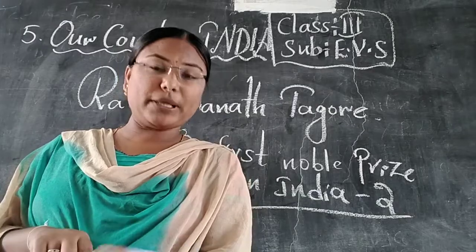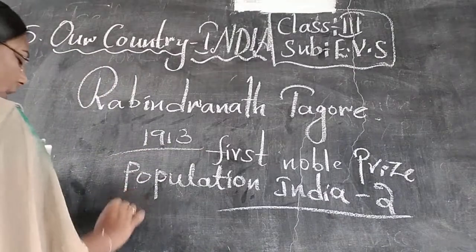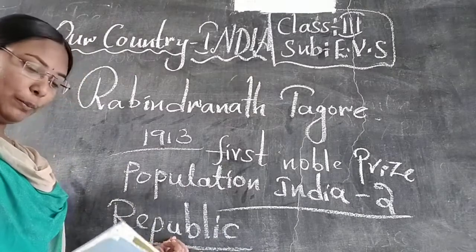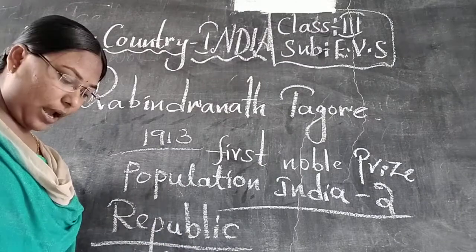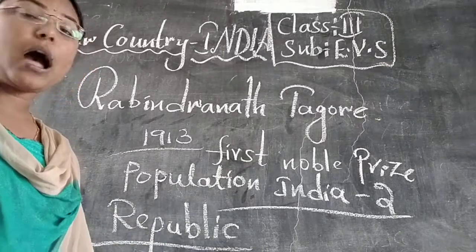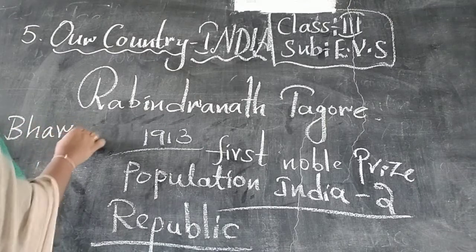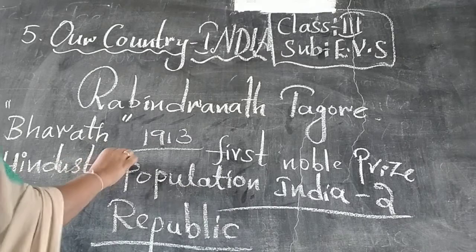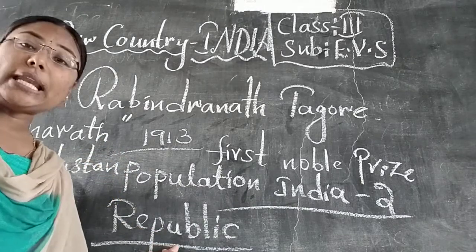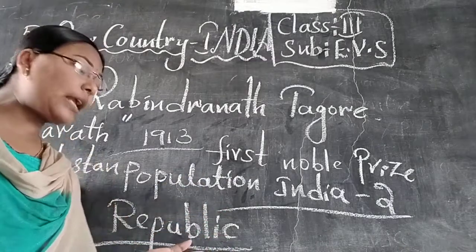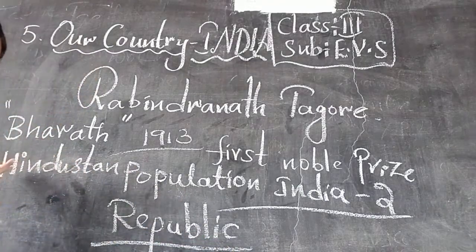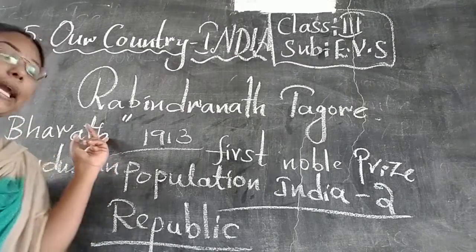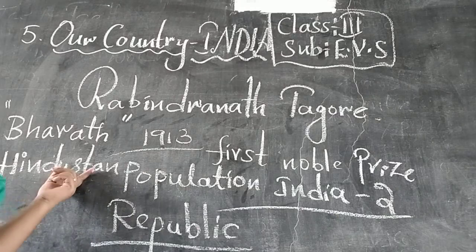The official name of our country is Republic of India. Other names of India are Bharat and Hindustan. The official name is Republic of India, and the other two names are Bharat — B-H-A-R-A-T-H — and Hindustan — H-I-N-D-U-S-T-A-N.